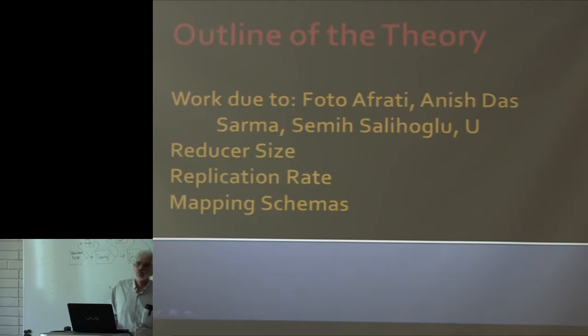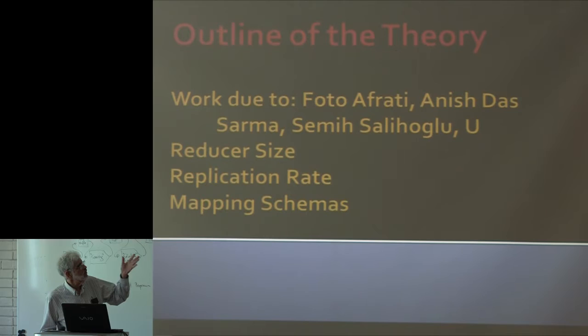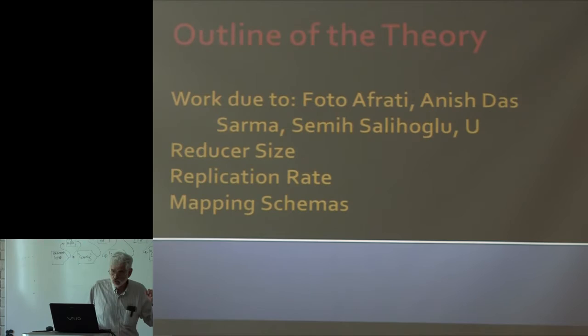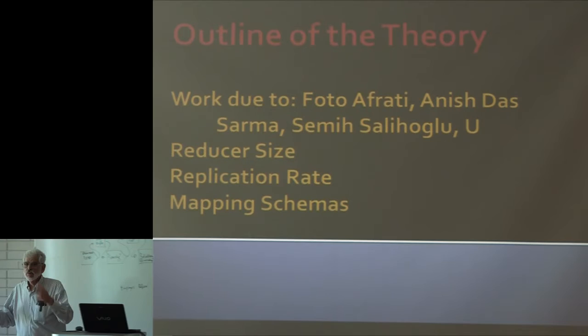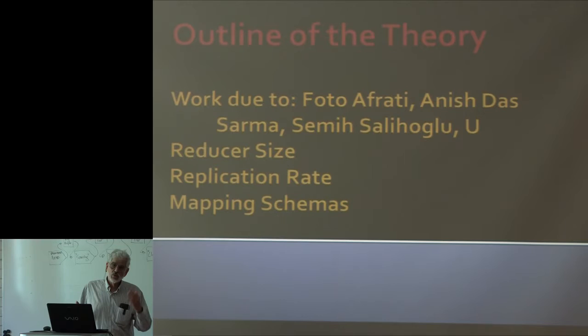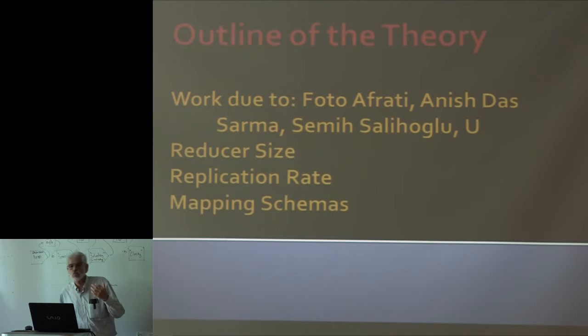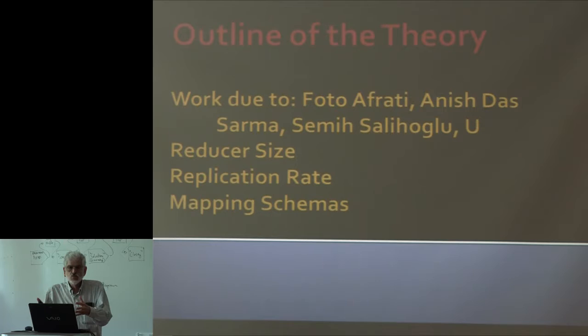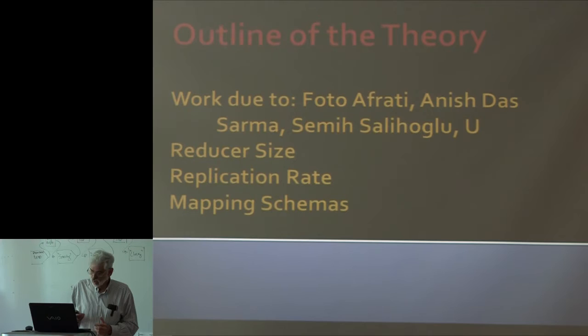Let me start the theory a little bit. My co-authors on this theory are Foto Afrati, Anish Sarma — a recent graduate from Stanford — Semih Salihoglu, who's graduating this year, and myself. There are three notions: reducer size, which is the number of inputs a reducer can take; replication rate, which is how many key-value pairs you generate per input; and the notion of a mapping schema, which is really a description of the algorithm. The theory says: if you want a small reducer size, you need a big replication rate.